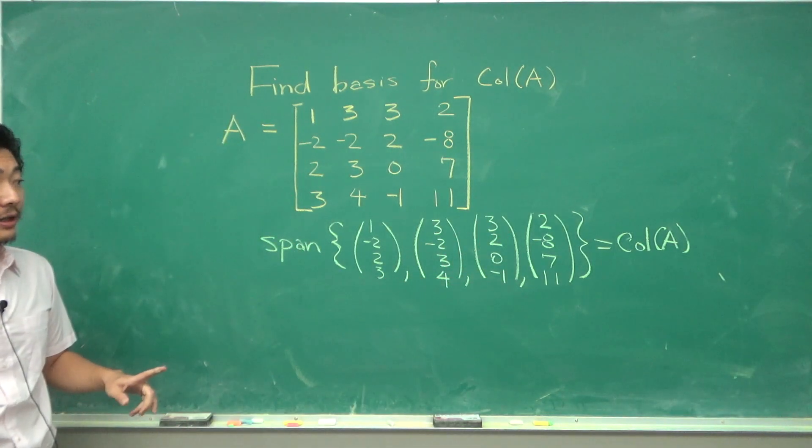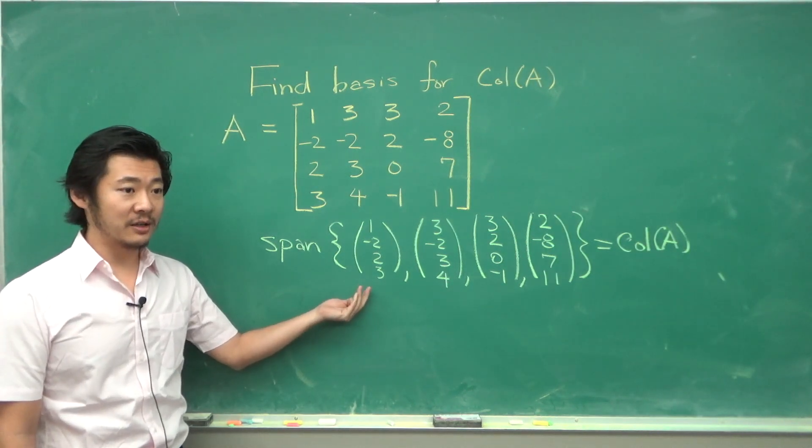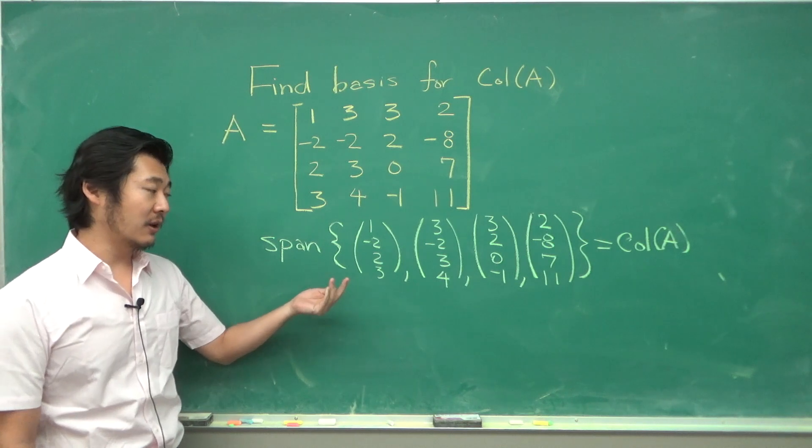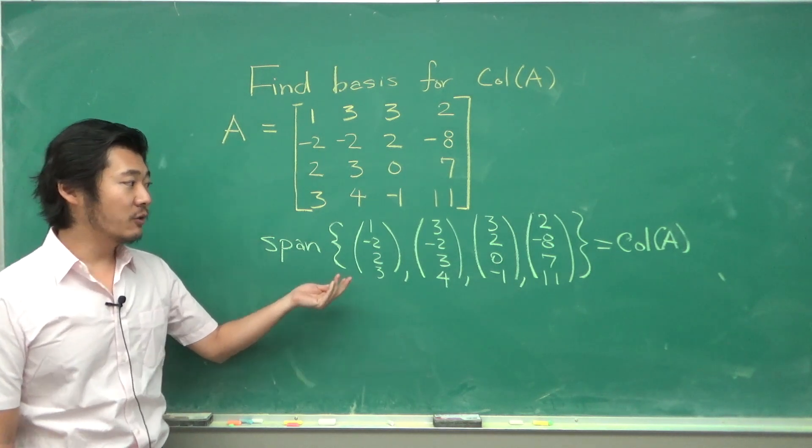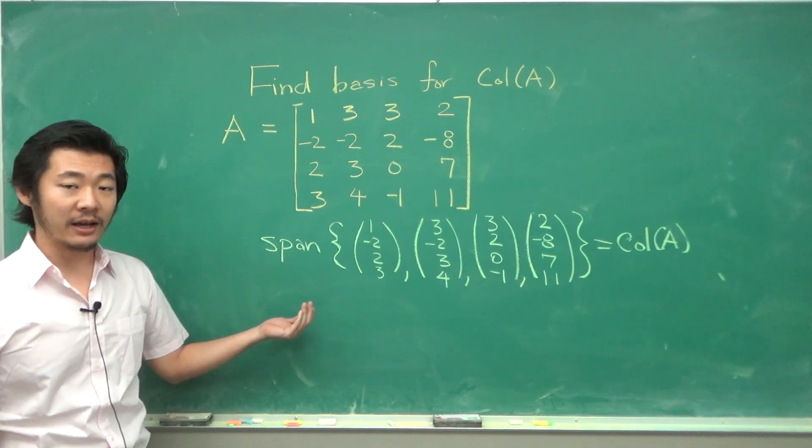So what we need to do is verify if these vectors are linearly independent or not, and if they are not linearly independent we need to see how they depend on each other so that we would know which vectors we can get rid of.